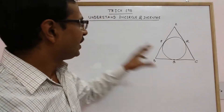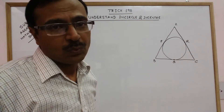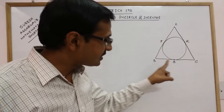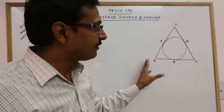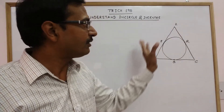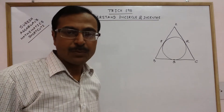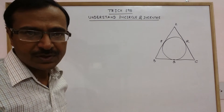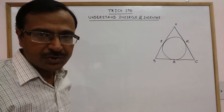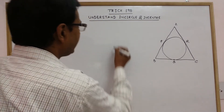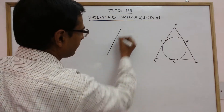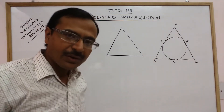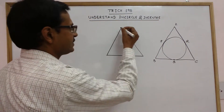This circle which touches the three sides of a triangle is called the incircle. Now, what is the incenter and how can we draw this circle when a given triangle with given measurements has been provided? To understand this, first of all we should know that in a triangle, whenever we draw the angle bisectors...